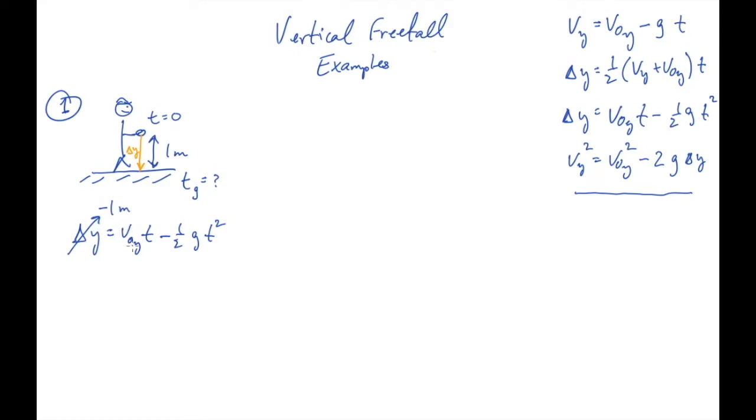v naught y is the ball's initial y component of velocity. It's v y at time t equals zero. That's what this naught indicates. That's the time when I first let go of it. The ball isn't moving when I let go of it. It's accelerating, but it's not moving. So that is zero, and I can zero that term out.